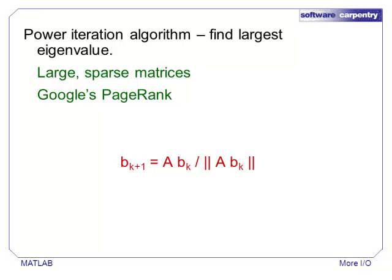An example of such a function is the power iteration algorithm, which finds the largest eigenpair of a matrix. It is often used on large, sparse matrices, such as the matrix of weights used by Google's PageRank algorithm.